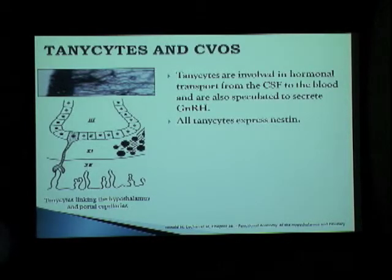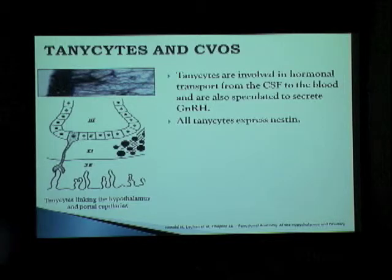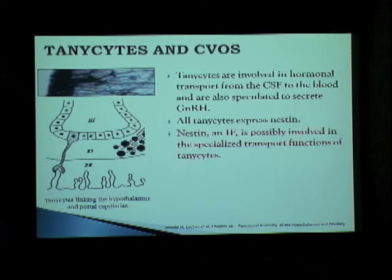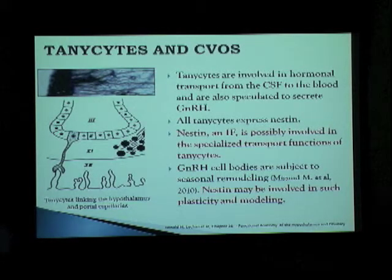This is not surprising, because tanycytes and CVOs do have an inherent claim. Tanycytes are involved in hormonal transport from the cerebrospinal fluid to the blood, and are also speculated to secrete gonadotropin-releasing hormone. So tanycytes being localized to CVO regions is not surprising at all. What is surprising is that all tanycytes express nestin, meaning that nestin — which is an intermediate filament — could possibly be involved in the specialized transport functions of tanycytes, and may also be involved in such plasticity and remodelling required to regulate the amount of hormones released during puberty and different stages of development.